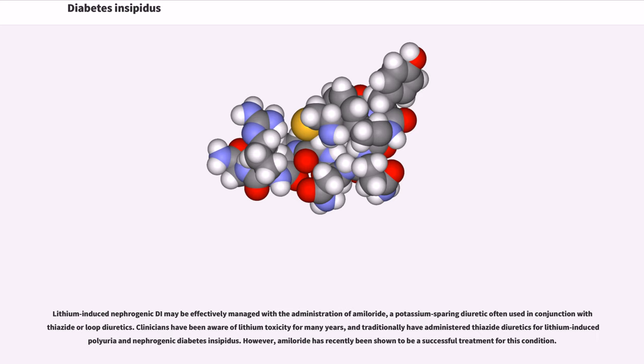Lithium induced nephrogenic DI may be effectively managed with the administration of amiloride, a potassium sparing diuretic often used in conjunction with thiazide or loop diuretics. Clinicians have been aware of lithium toxicity for many years, and traditionally have administered thiazide diuretics for lithium-inducing polyuria and nephrogenic diabetes insipidus. However, amiloride has recently been shown to be a successful treatment for this condition.